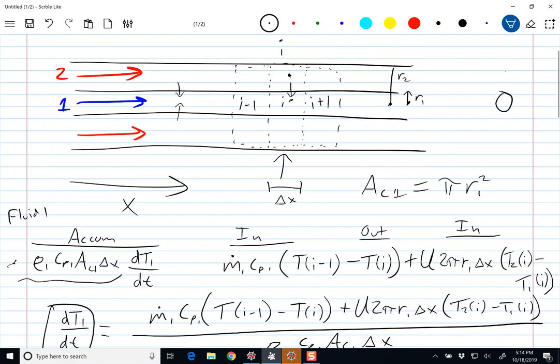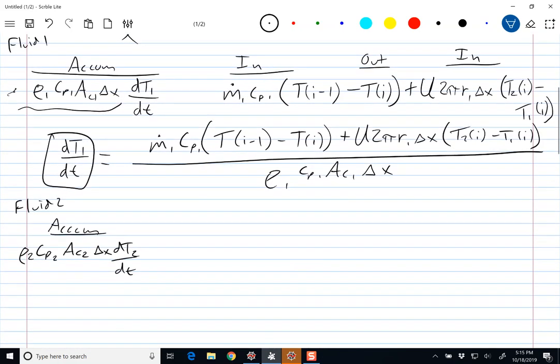Our accumulation term is going to be similar, but this could physically be a different fluid. So we're going to go rho 2 cp2 ac2 times delta x multiplied by dT2 dt. So ac2 is going to be this because it's an annulus. If we looked at a cross section of this, our system looks like this. Here is ac1 and then ac2 is going to be this annular region. We can calculate that fairly simply. ac2 is going to be equal to pi times r2 squared minus r1 squared.